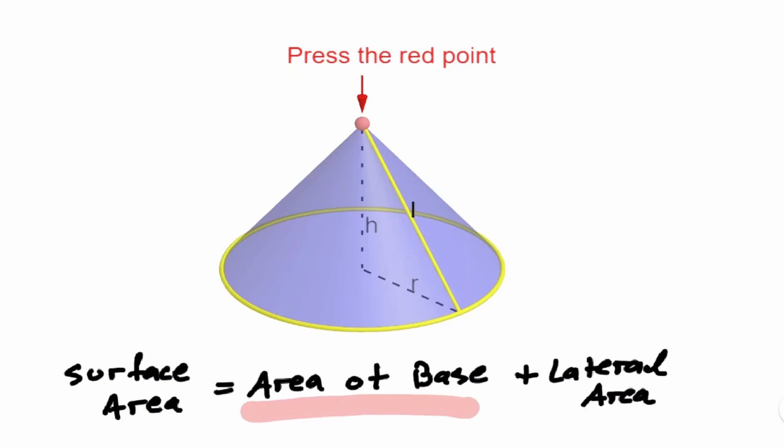To find the area of the base, we just need to find the area of a circle, which we know an equation for. That would be pi r squared. Now, how do we find the lateral area? It will be easier to visualize if we place this cone in a flat surface.